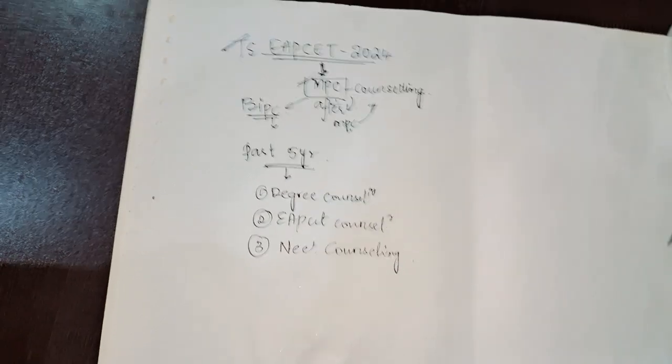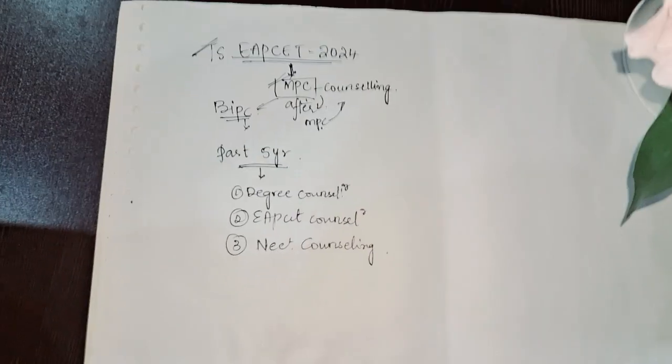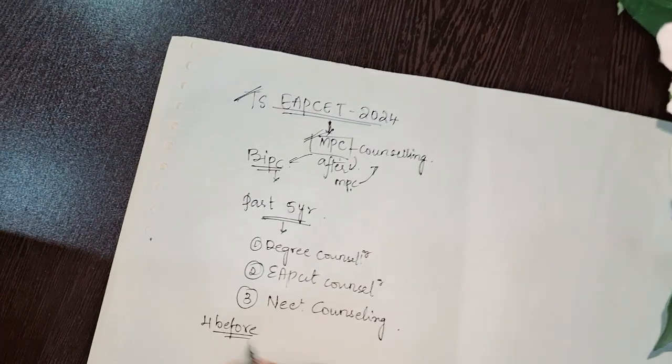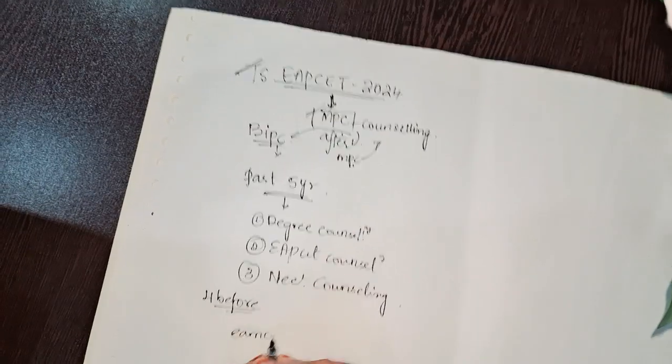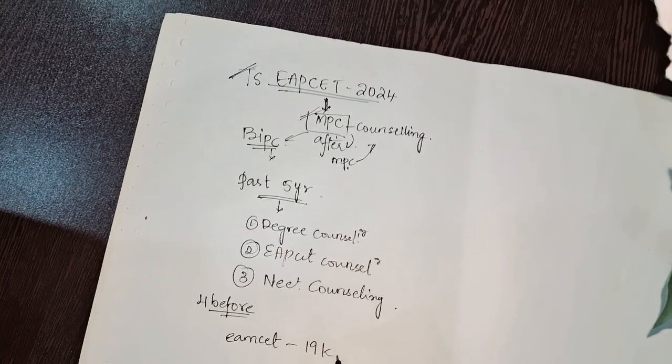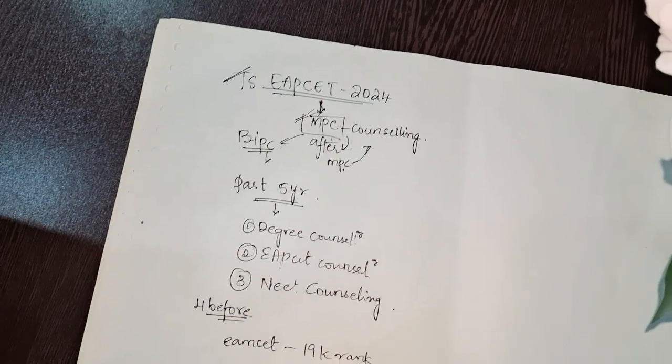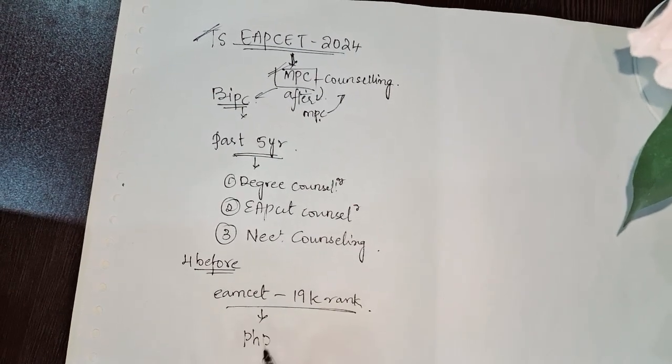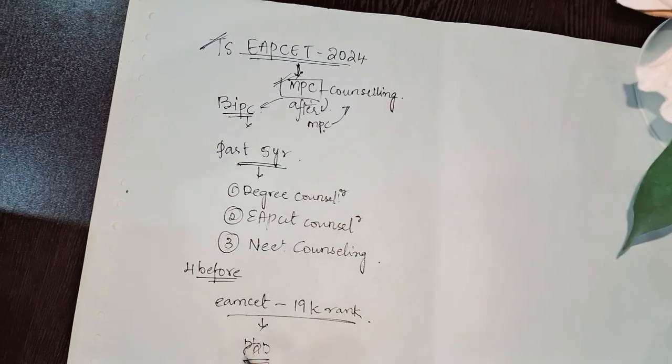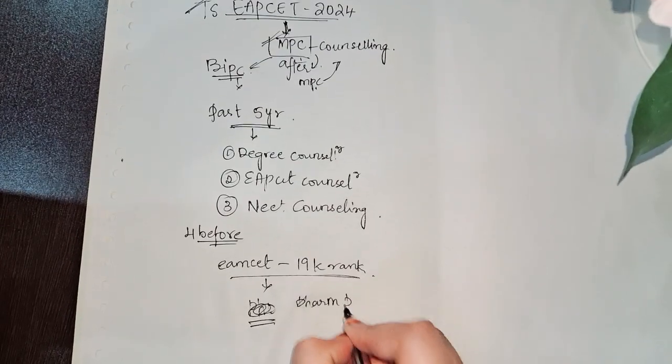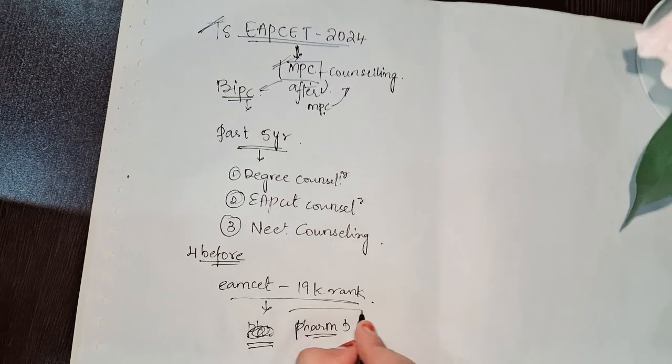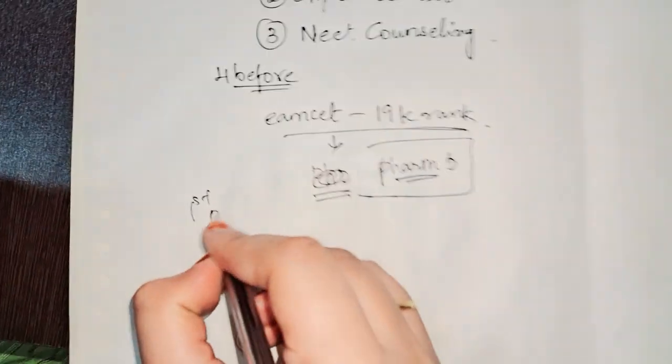Let me tell you about four years before. My sister got 19K rank in EAPCET. So what she decided was, if she got a 19K rank, she thought that she will get a seat in PharmD. Let me write PharmD. She thought she will get a seat in PharmD, but this did not happen in the first phase.